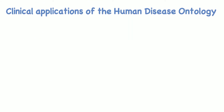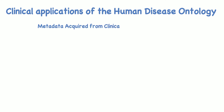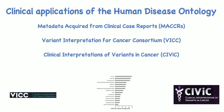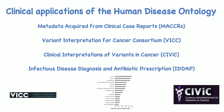Numerous clinical resources and tools utilize the Human Disease Ontology. Examples of clinical use cases include metadata acquired from clinical case reports, which indexes clinical case reports; the Variant Interpretation for Cancer Consortium and Clinical Interpretations of Variants in Cancer, which enable genetic variant interpretation; and the Infectious Disease Diagnosis and Antibiotic Prescription, which identifies antibiotic therapy options in an AI-driven clinical decision support system.